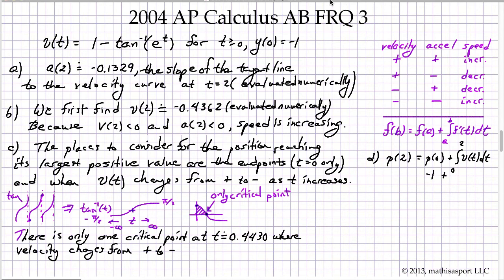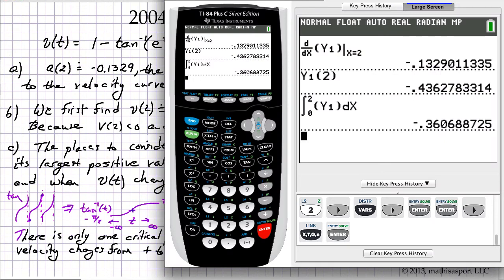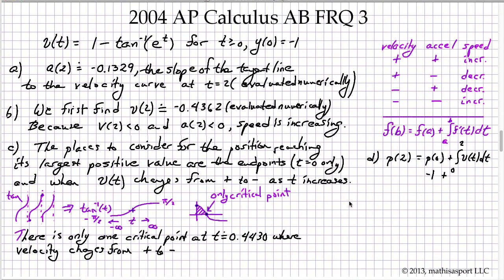This is negative 1 plus... I keep forgetting what that approximation is. Negative 0.3606. Position at 2 equals negative 1.3606. Evaluating numerically.